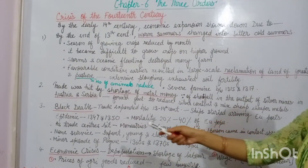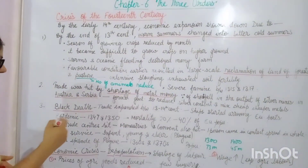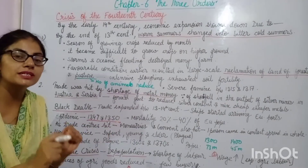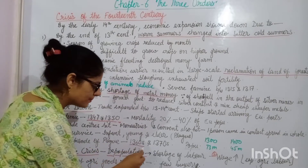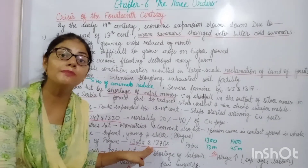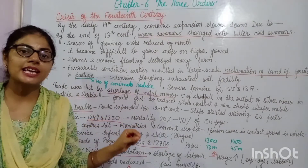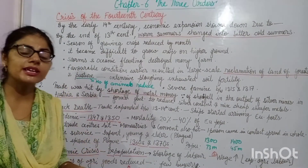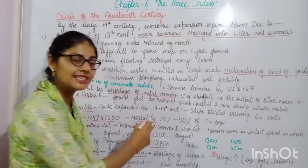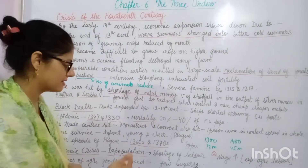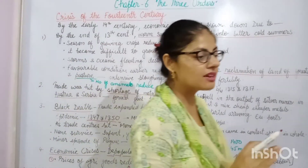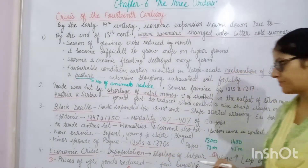This epidemic spread mainly during the period from 1347 to 1350 and was extremely severe. Although the plague spread again from the 1360s to the 1370s, it was not as severe as during 1347 to 1350. The mortality rate in Europe was from 20 to 40 percent — meaning 20 to 40 percent of the European population died because of this disease.